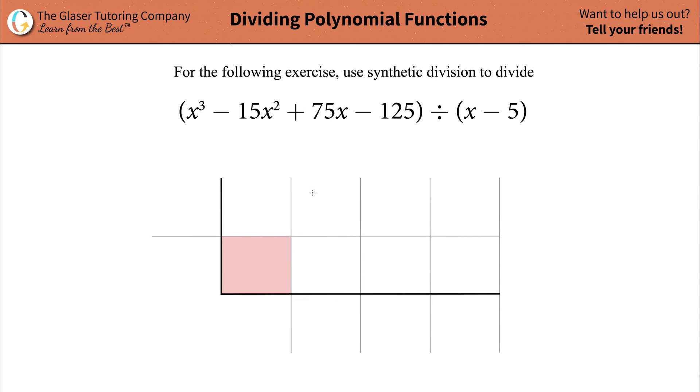So the first thing I'd like to do is set up my synthetic division table. I will know the number of columns inside of this table based off of the highest power of x. So if the highest power is three, just add one to it and you'll have a total of four columns here.